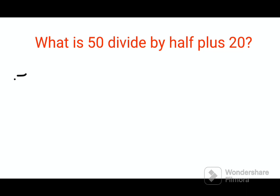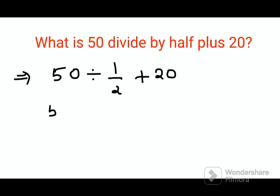The solution is very simple. You just have to write down this entire thing in the form of a math expression: 50 divided by half, plus 20. When it comes to division between a number and a fraction, where the latter part is a fraction, we convert the division sign to multiplication and take the reciprocal — so we have 2 upon 1, which is just 2.